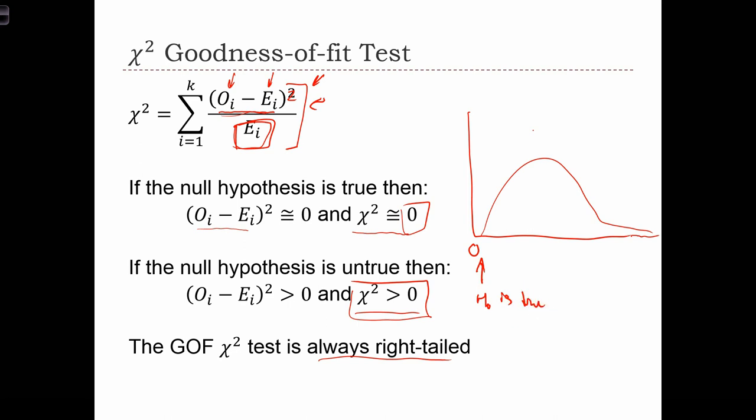When we go out and collect a sample, we might get a chi-squared over here, we might get one over here, we might get one over here. How do we know which one is enough evidence to reject the null hypothesis?